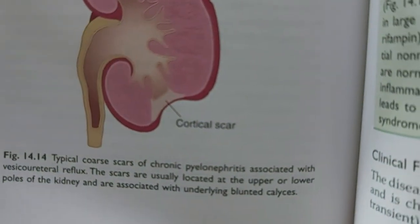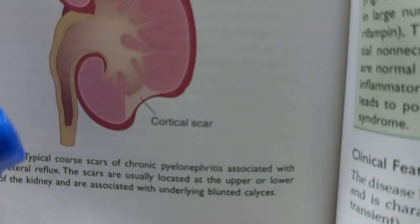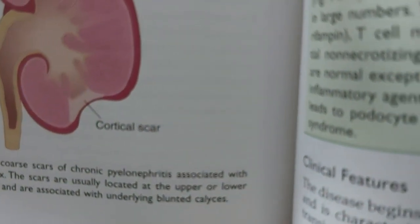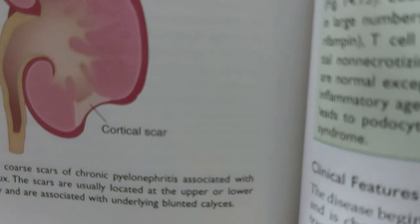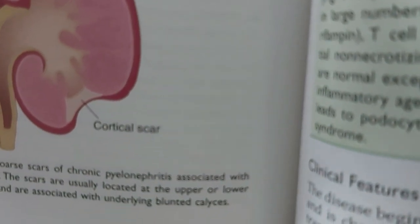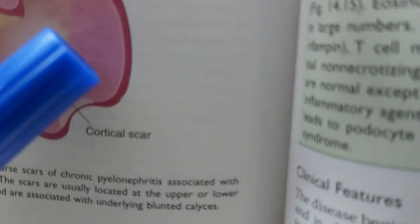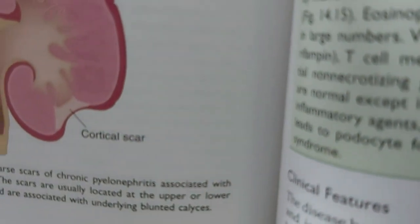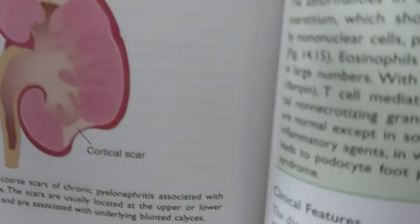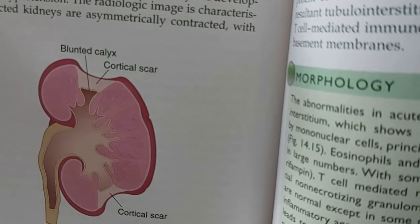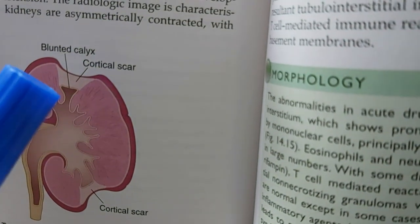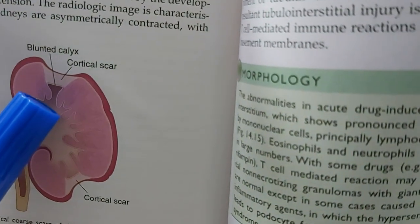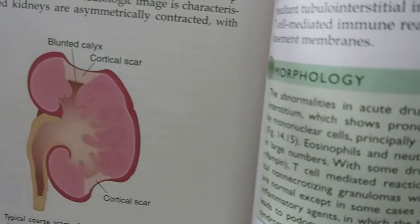On the diagram of the kidney showing the minor and major calyces, we can see that normal calyces are sharp, but the affected calyces are blunted — this blunting of the calyces occurs in chronic pyelonephritis.